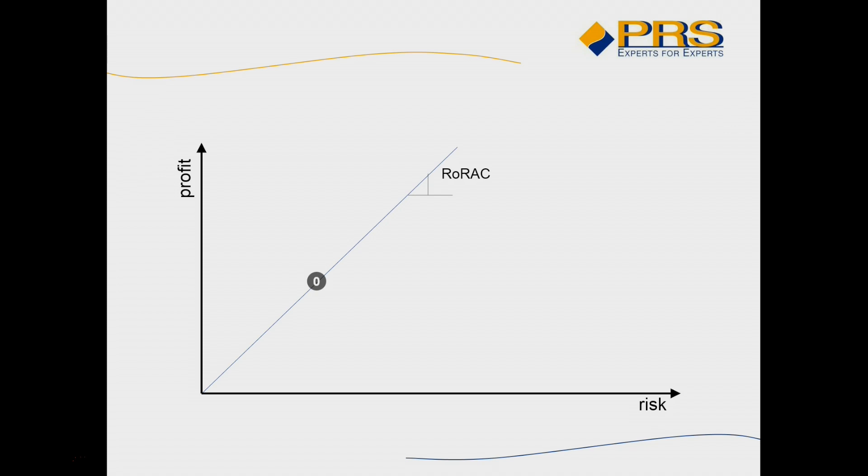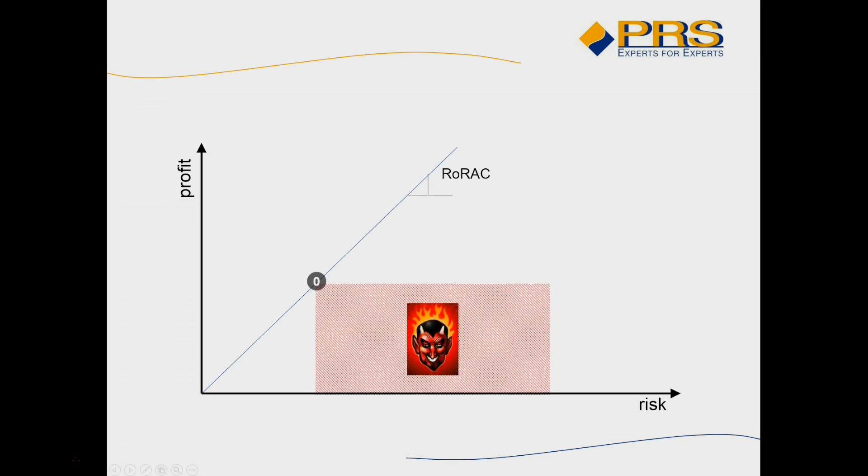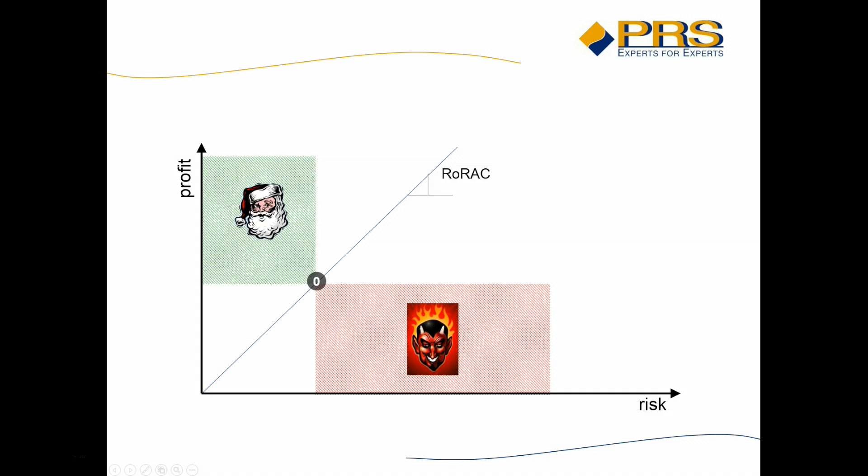Now there's one region in this profit versus risk plot which we should avoid by all means. Well clearly you don't want to reduce your profit and at the same time increase your risk. And of course where do we want to end up? Well of course in the region where you increase your profit and reduce your risk. Sounds like Santa Claus but maybe it's not that unrealistic.